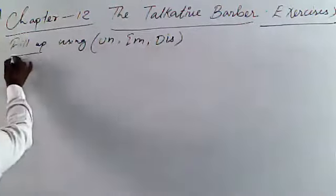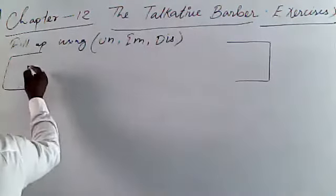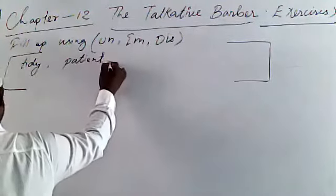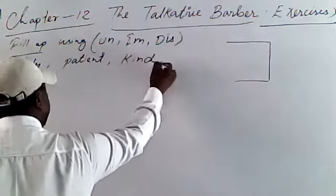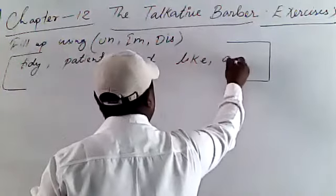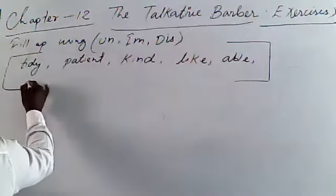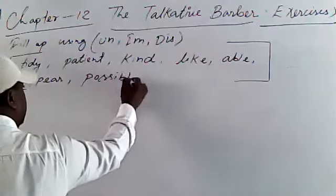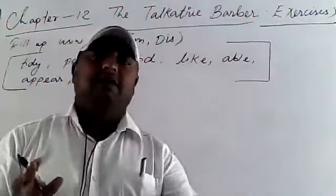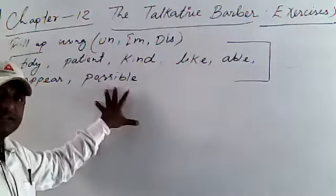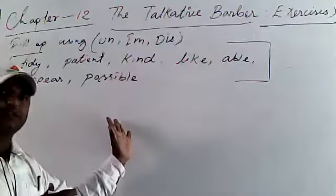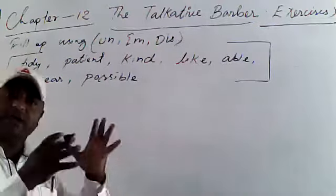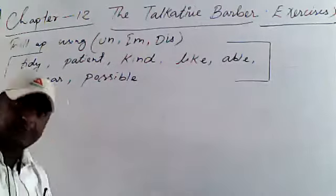Some options are given here. I am going to write the options: tidy, patient, kind, like, able, appear, possible. We are going to make the opposite of these words — for example, possible → impossible, kind → unkind, like → unlike, able → unable. We have to change each word into its opposite and fill in the blanks.